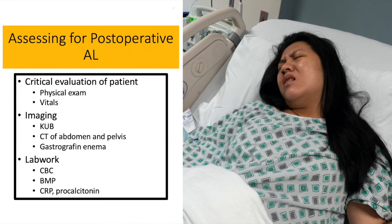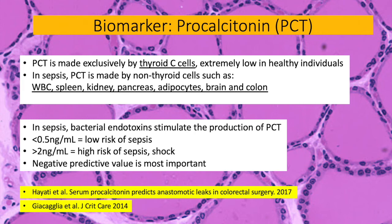CRP, unfortunately, is very insensitive and nonspecific. Procalcitonin is made exclusively by thyroid C-cells, and in healthy individuals the levels are extremely low. But in sepsis, procalcitonin is made by non-thyroid cells such as white blood cells, spleen, kidney, pancreas, adipocytes, brain, and colon. It's described as an early, sensitive, and specific marker for sepsis. Bacterial endotoxins stimulate the production of procalcitonin, releasing it into the bloodstream in three to four hours and peaking after eight to 24 hours. Values under 0.5 nanograms per milliliter suggest a low risk of sepsis, while values greater than 2 suggest a high risk of sepsis and shock.